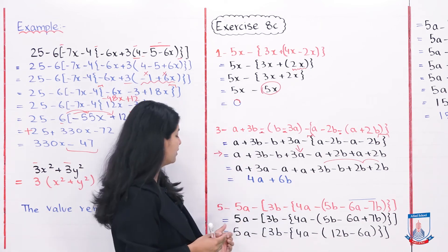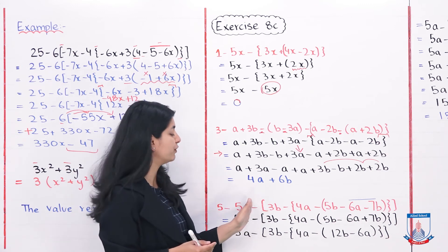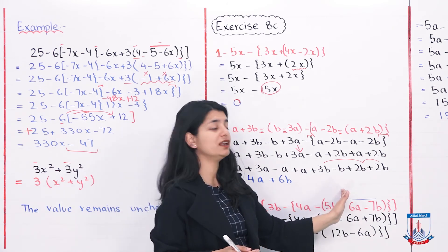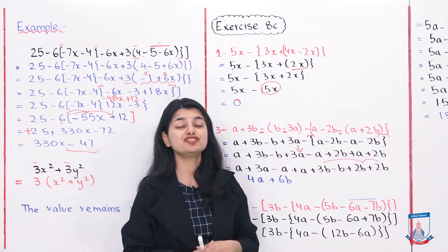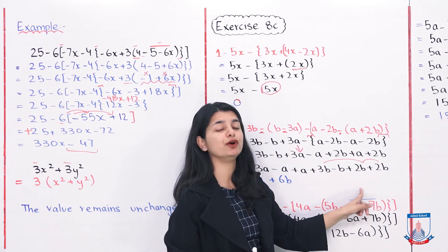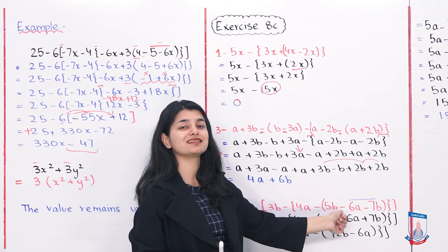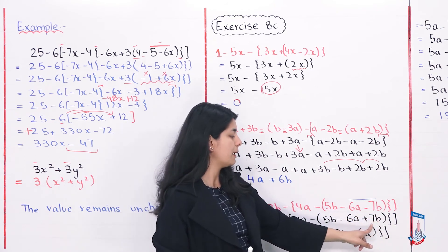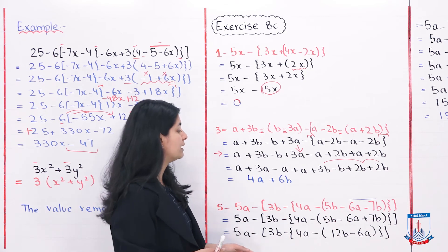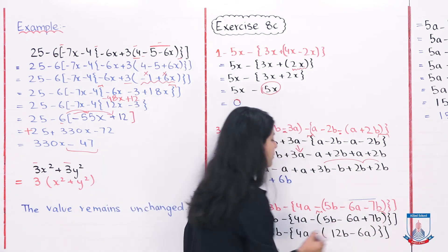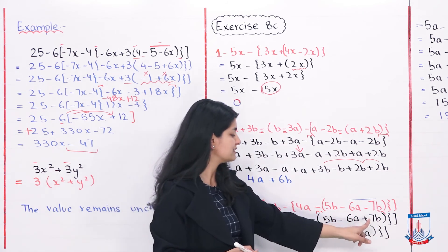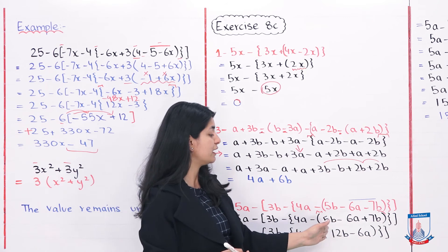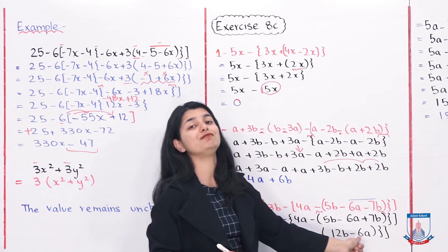Now let's look at question number 5. Question 5 is: 5a minus bracket 3b minus braces 4a minus parenthesis 5b minus vinculum 6a minus 7b. First I address the vinculum because it has first priority. Outside the vinculum is a minus sign, so the signs of both terms inside change: 6a stays as minus 6a, and minus 7b becomes plus 7b. Then the next step is to open the parenthesis. Inside the parenthesis, 5b and 7b are like terms — 5b minus 7b combined give 12b, and minus 6a comes down. So inside the parenthesis we now have 12b minus 6a.